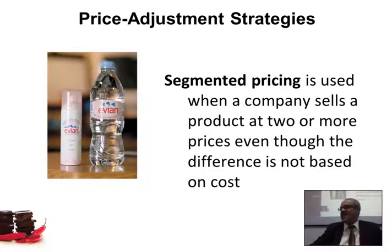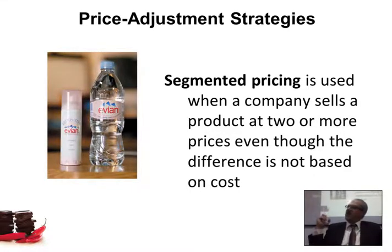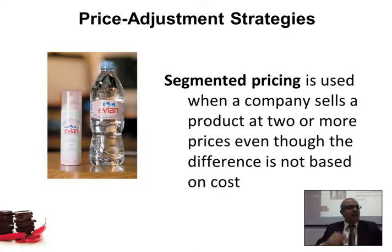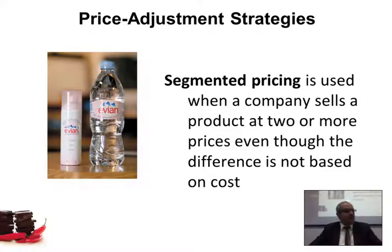For segmented pricing, consider the example of Evian water. They sell the same water for drinking at a completely different price than when they sell it as a facial spray. The spray version is around $25 while drinking water is about $1. In both cases you're selling water, but the market segments are completely different — people who want a moisturizing spray versus people who drink it. The cost to produce both may be very similar, but the pricing strategy is completely different.